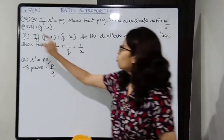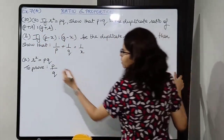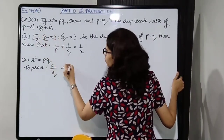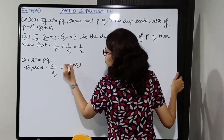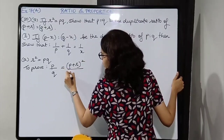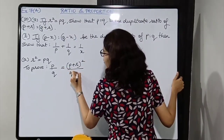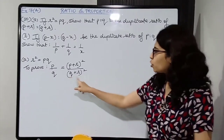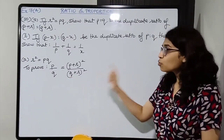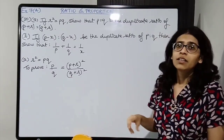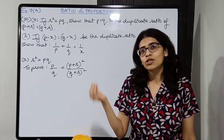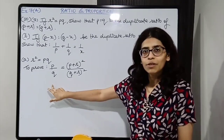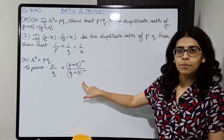Now over here we have R squared, and we are given that R squared equals PQ. So substituting PQ: the numerator becomes P squared plus 2PR plus PQ. P is common in each term, so take P common — leaving P plus 2R plus Q inside the bracket.